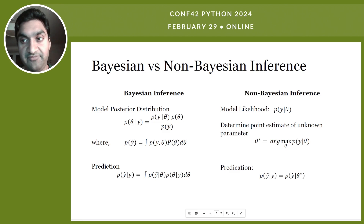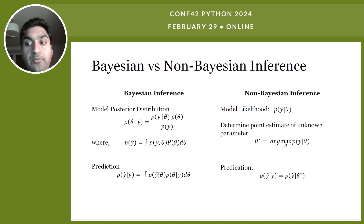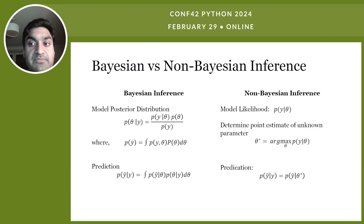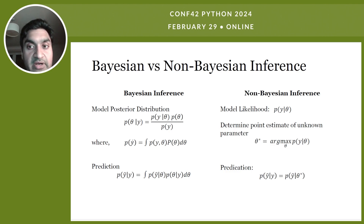Now let's look at how inference happens with Bayesian versus non-Bayesian models. In non-Bayesian inference, we determine a point estimate of the unknown parameter that maximizes the likelihood of the data. We find the parameter which maximizes this likelihood and it comes as a single point estimate. For a new instance, we predict only using that point estimate.